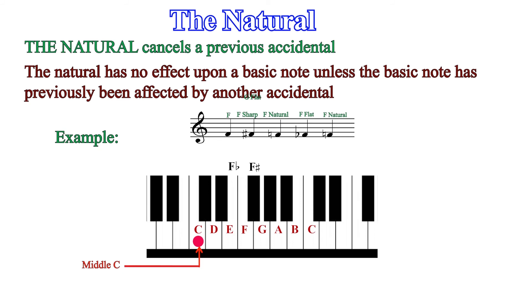When F is flattened, it becomes F flat, which in this case is E, since there is no black key between E and F. F is then naturalized again so that it goes back to the original white key.